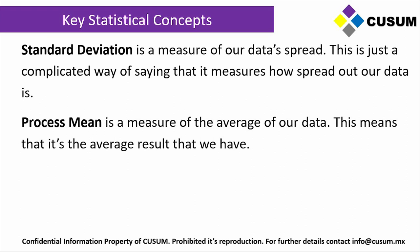The first key concept is standard deviation, which is a measure of our data's spread. It lets us know how spread out our data is — whether it is concentrated on just one value or tends to have multiple values. Our process mean is a measure of the average of our data: if we grab all our data points, add them together, and divide by the number of data points, that would be our process mean.